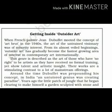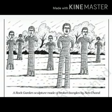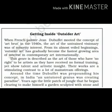Around the same time that Dubuffet was propounding his concept in France, an untutored genius in India was creating a paradise. 'Untutored genius' means an unskilled, untrained yet intelligent person. Years ago, the little patch of jungle that he began clearing to make himself a garden — he wanted to turn it into a garden sculpted with stone and recycled material.